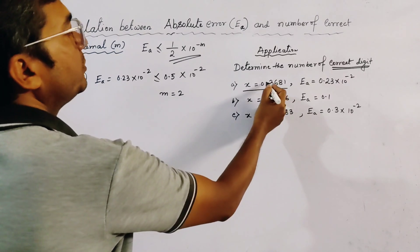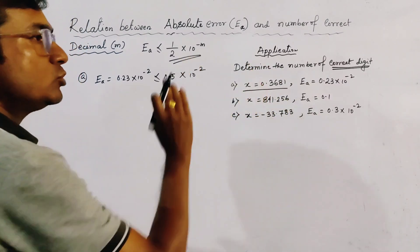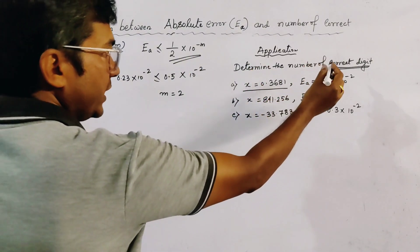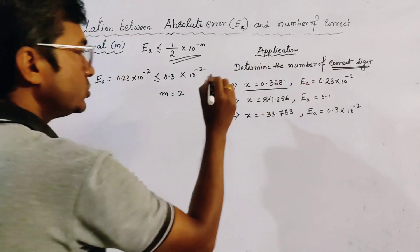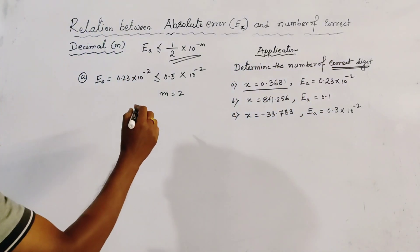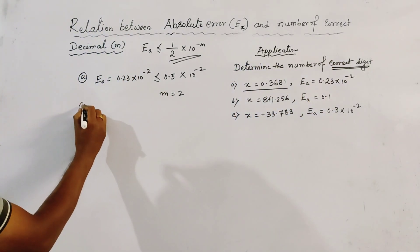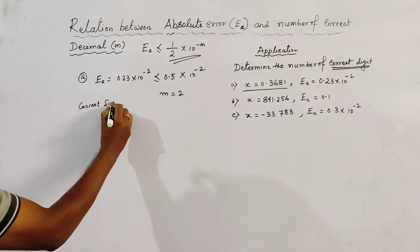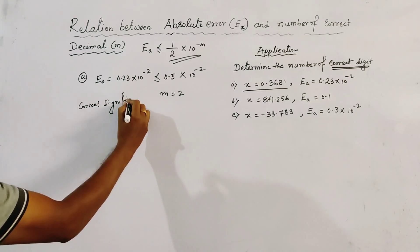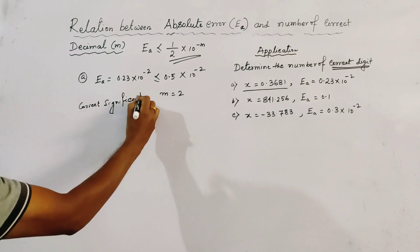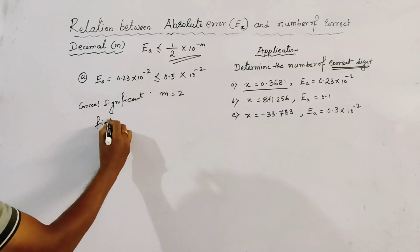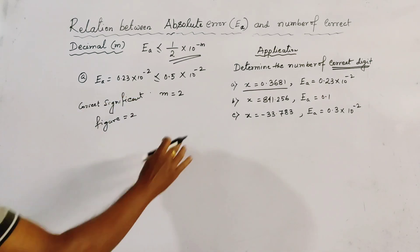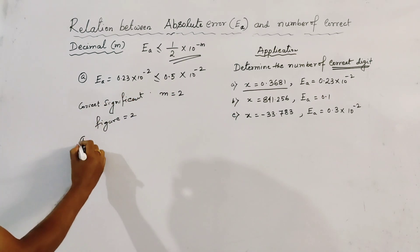Before the decimal, there is no significant figure. So this number is correct up to 2 significant figures. Therefore, the number of correct significant figures for case (a) is 2.